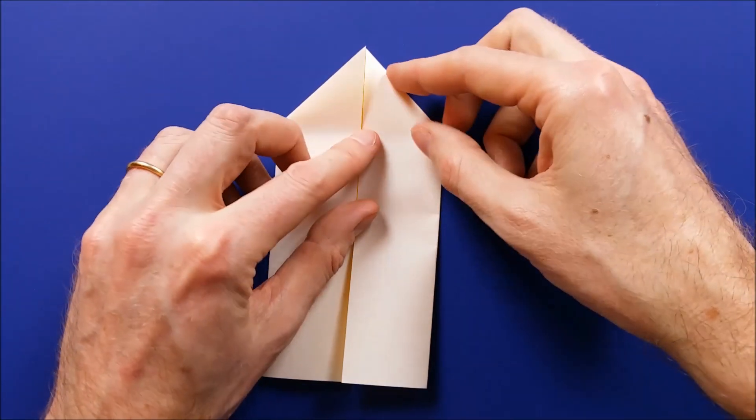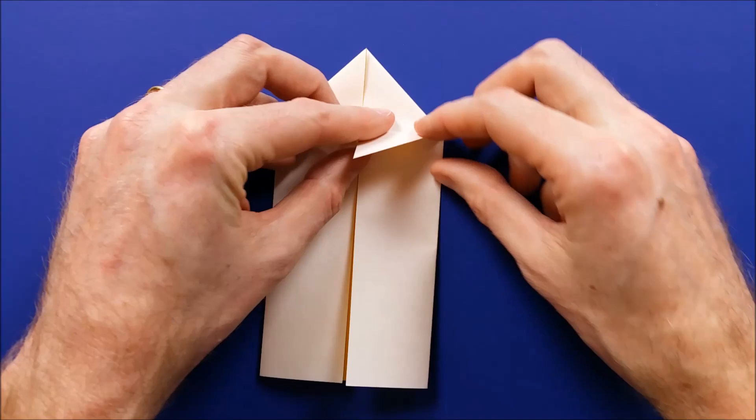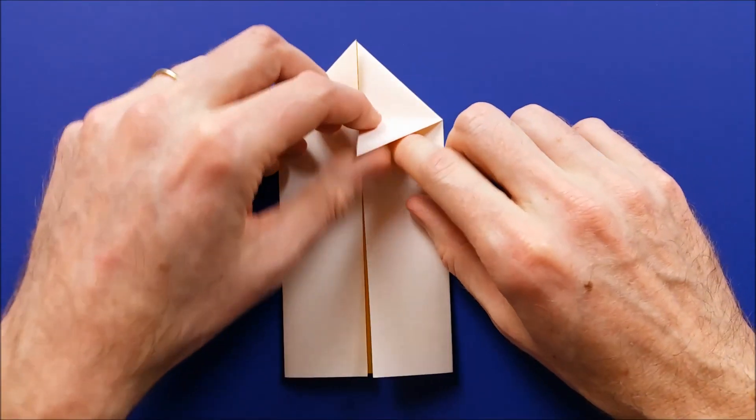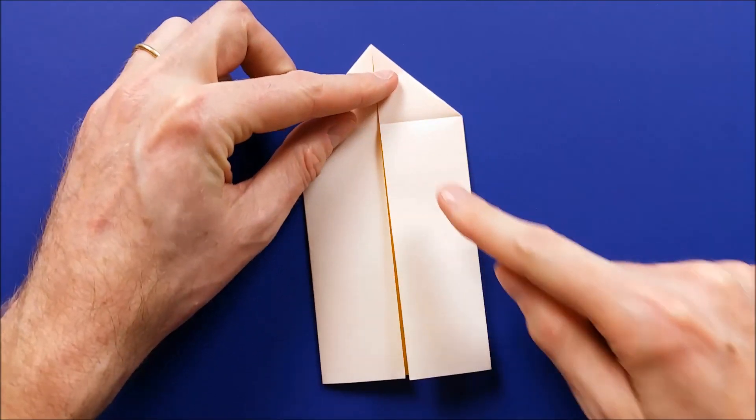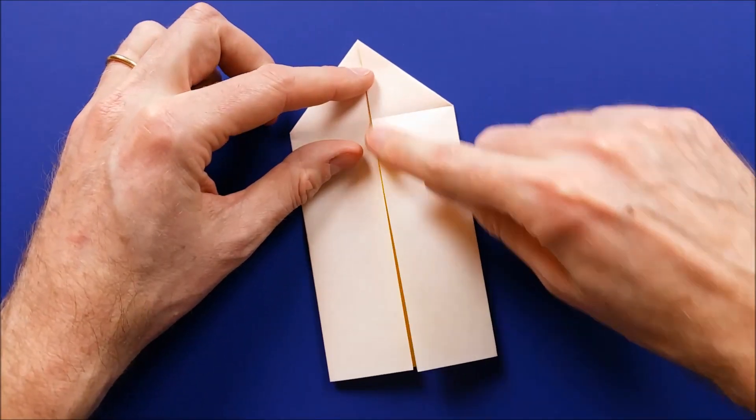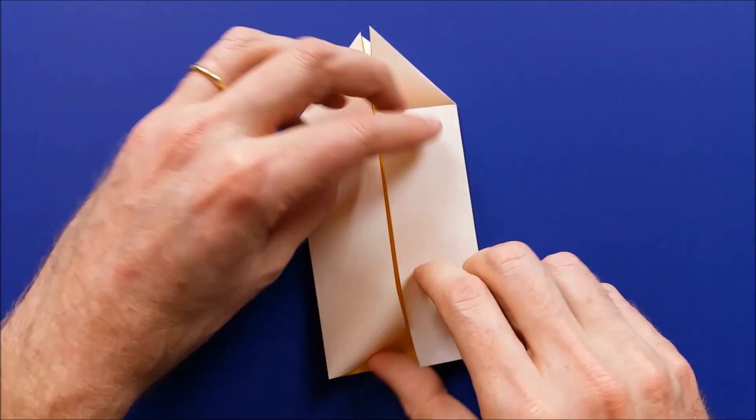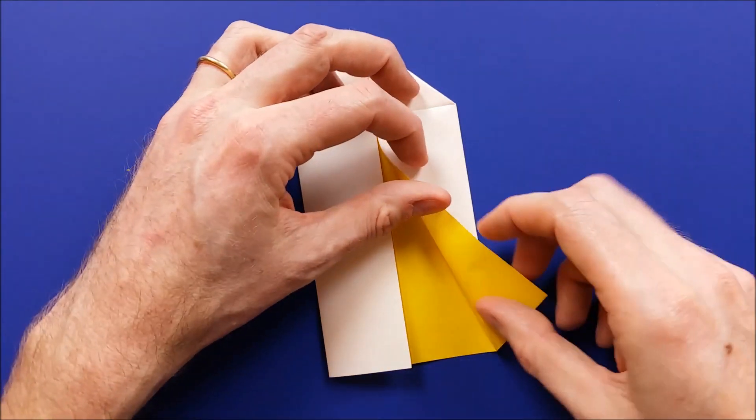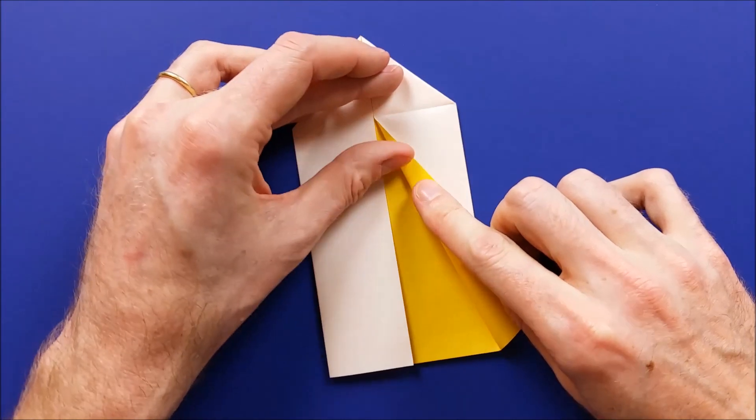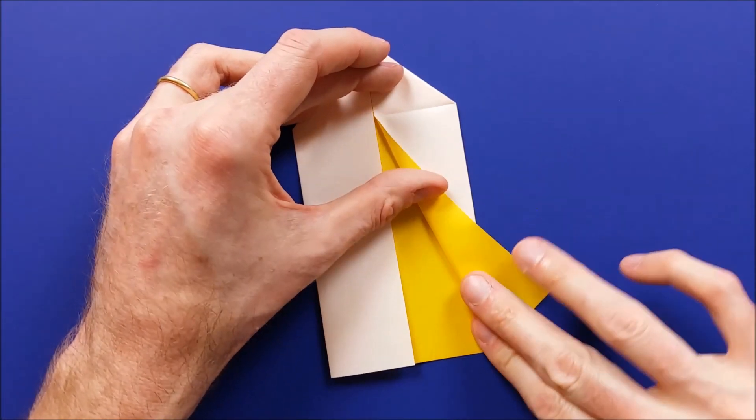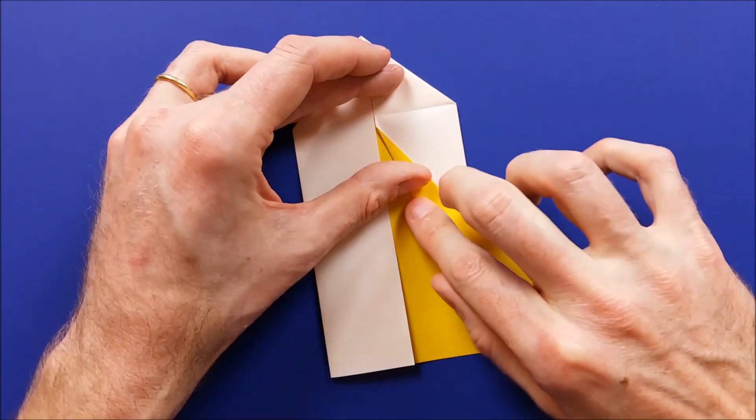And now we are going to take this tip and fold it down. And this will mark this point. And now what we are going to do is to fold from this point to this point, like this. Then mark the fold.